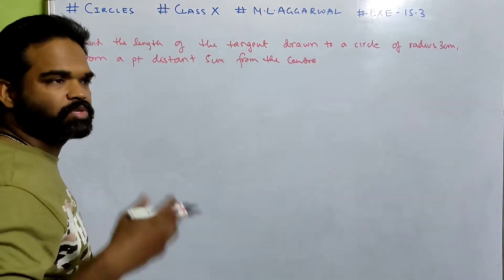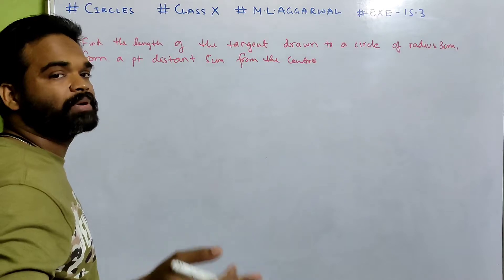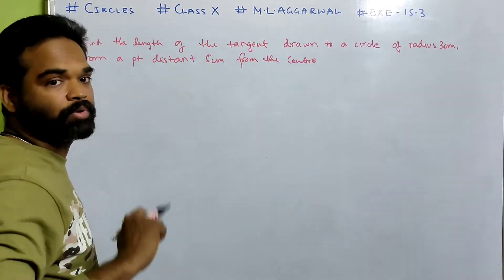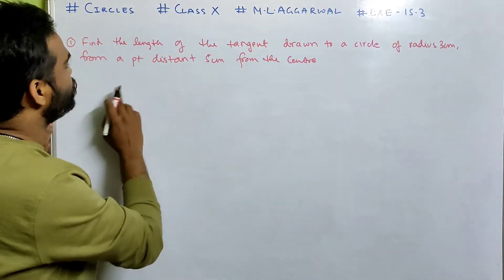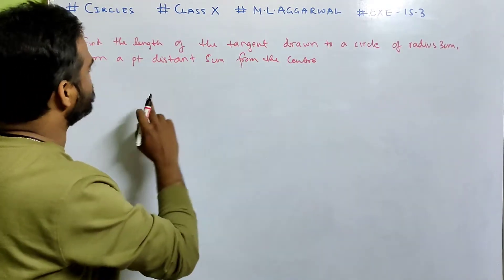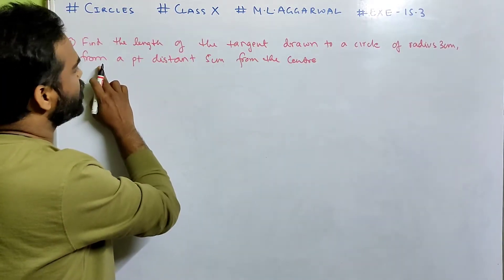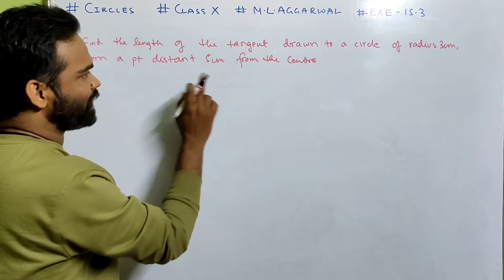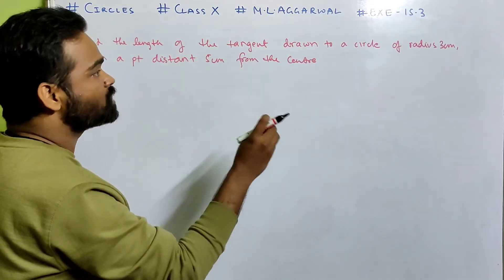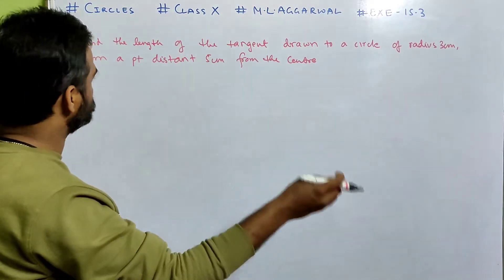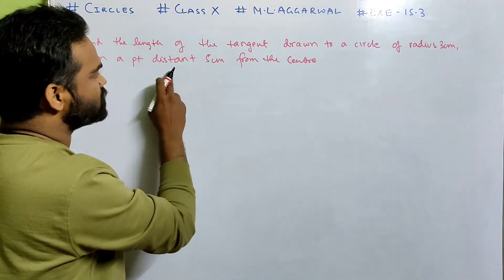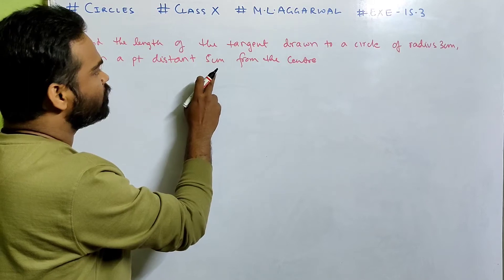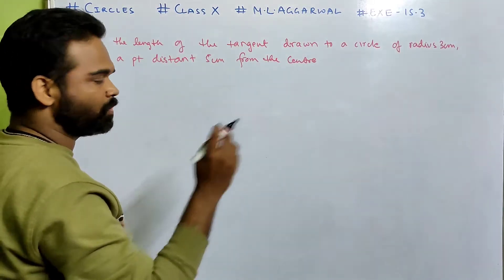Before doing the sums, we should know all the properties and theorems properly. Let us look at the first sum, exercise 15.3: Find the length of the tangent drawn to a circle of radius 3 cm from a point distant 5 cm from the center.